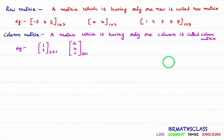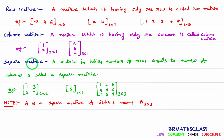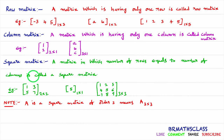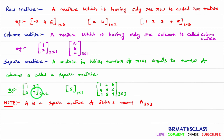Now we will learn the definition of square matrix, which is very important. What is a square matrix? A matrix in which the number of rows equals the number of columns is called a square matrix. Observe this example — the order of this matrix is 2 by 2. The number of rows equals the number of columns, so this is an example of a square matrix.